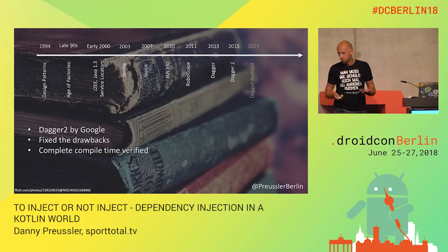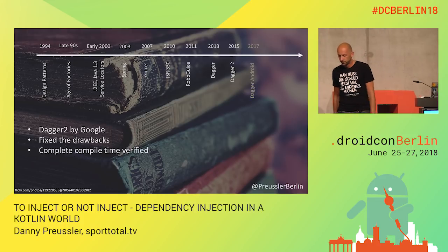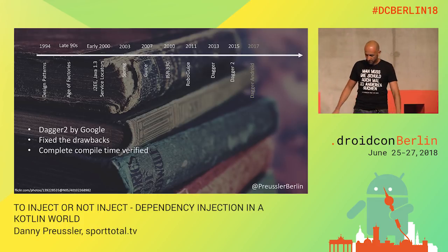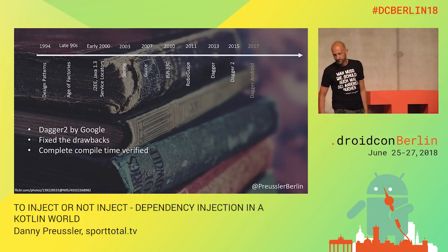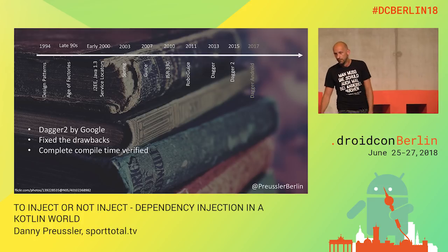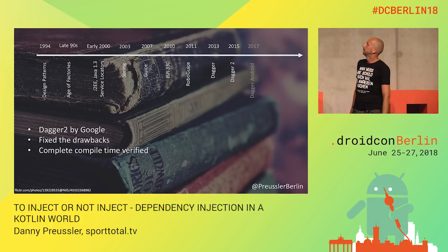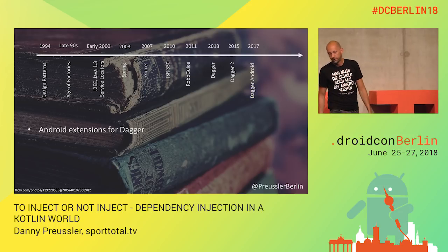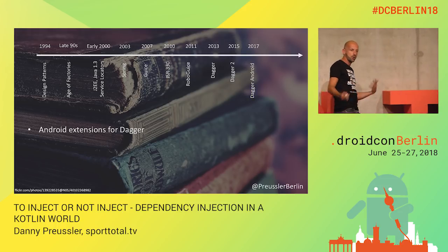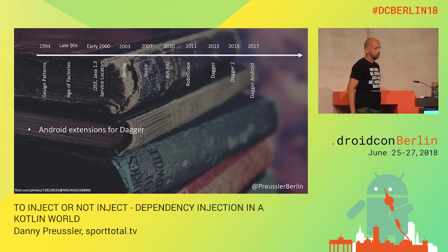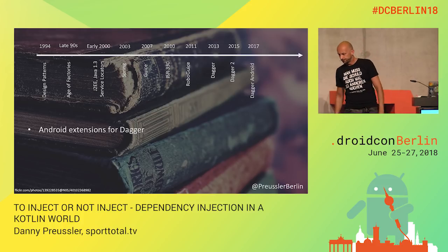Because of those drawbacks, Google took over and gave us Dagger 2, which fixed those drawbacks — complete validation is done at compile time. Everyone lived happily ever after... until Dagger Android came out with some Android extensions to fix some of the boilerplate we had to write. So that's where we're coming from.